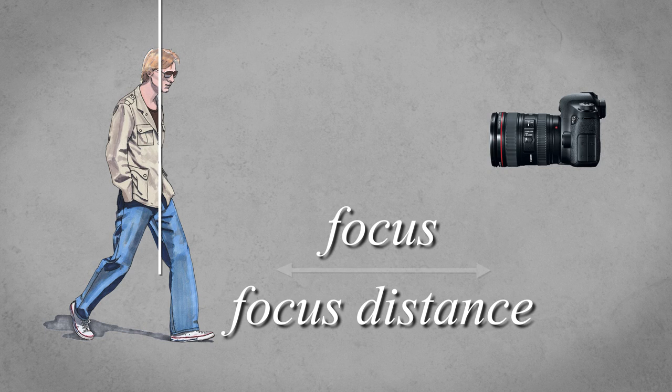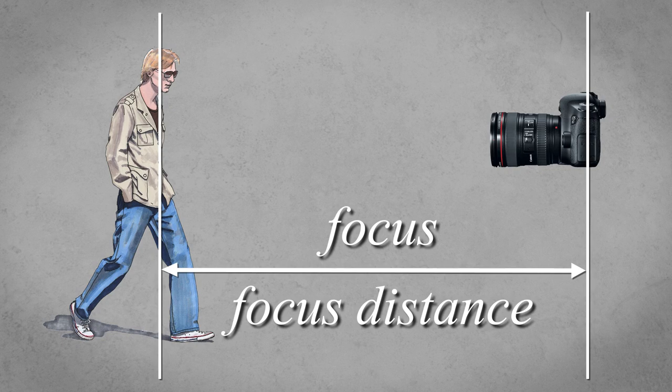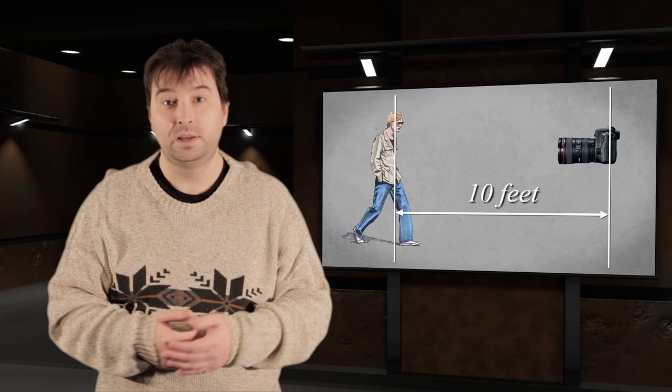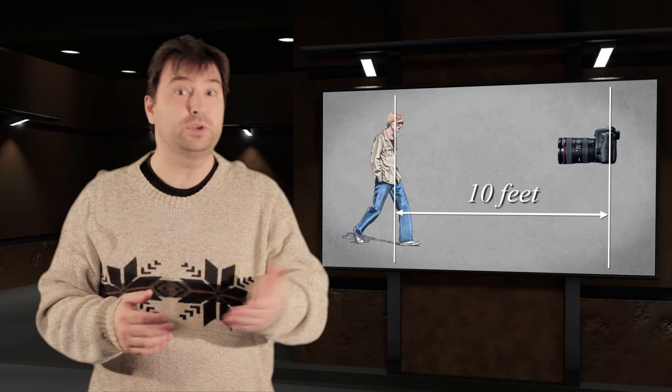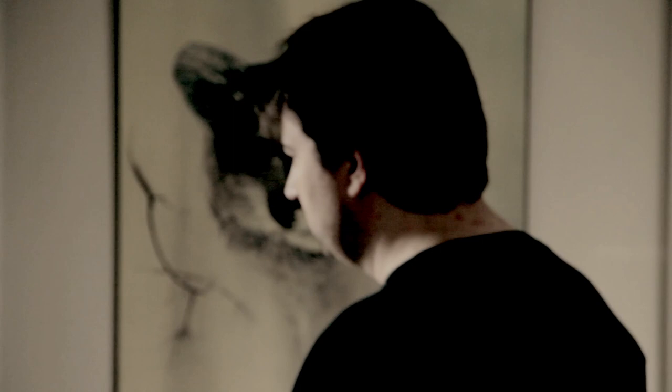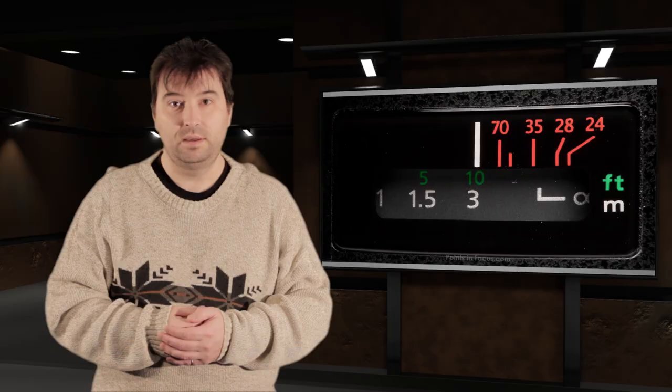Focus, or more specifically, focus distance, is the distance between the subject and the image sensor in the camera. The camera's focus should be set to this distance in order to have the subject appear in focus. For example, when the subject is 10 feet from the camera, the camera's focus should be set at 10 feet. If the subject moves closer than the camera's focus distance, it will lose focus and become blurry. The same thing may happen if it moves further than the focus distance.